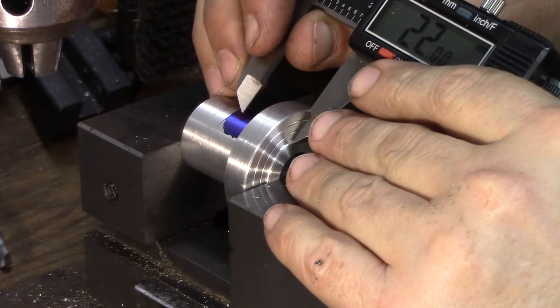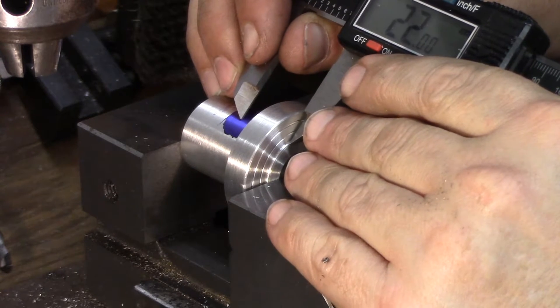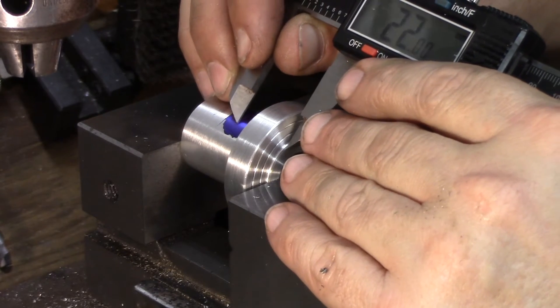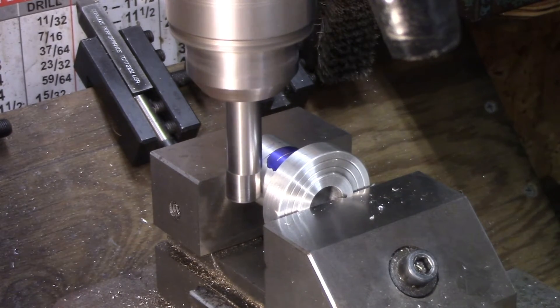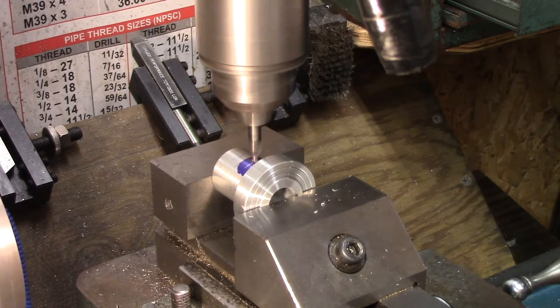Welcome back. In this episode, we are going to finish up making the shaft. Got a few operations still left on it. And we're also going to make the indicator holder for the body. So let's get started making the indicator holder and go from there.